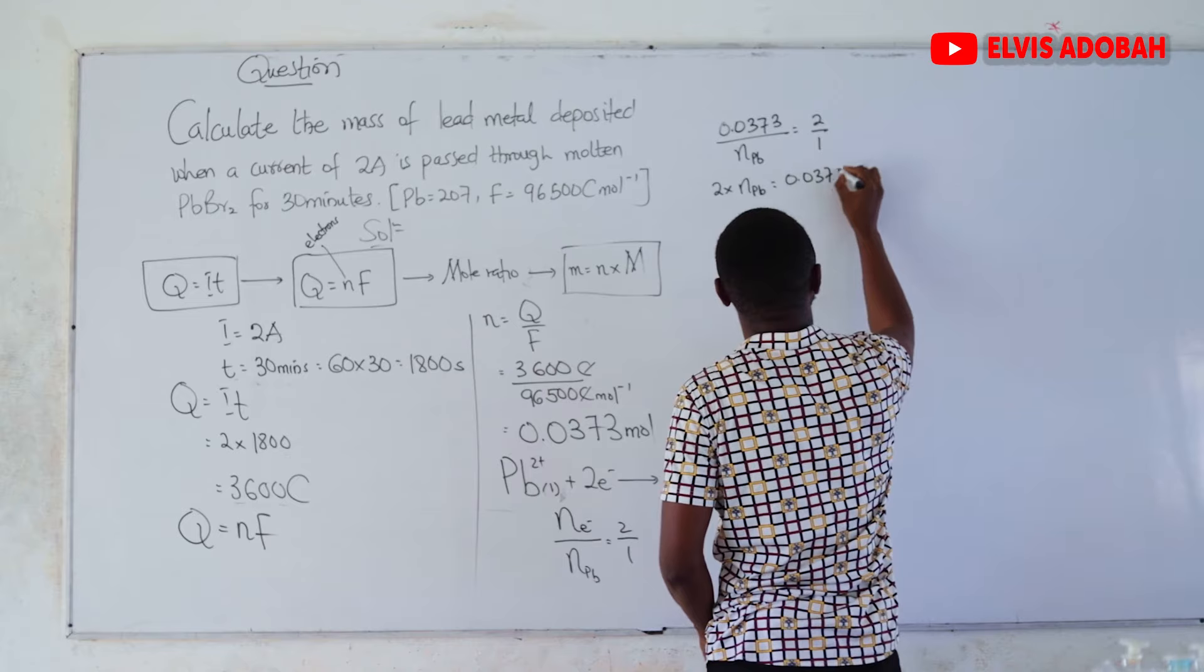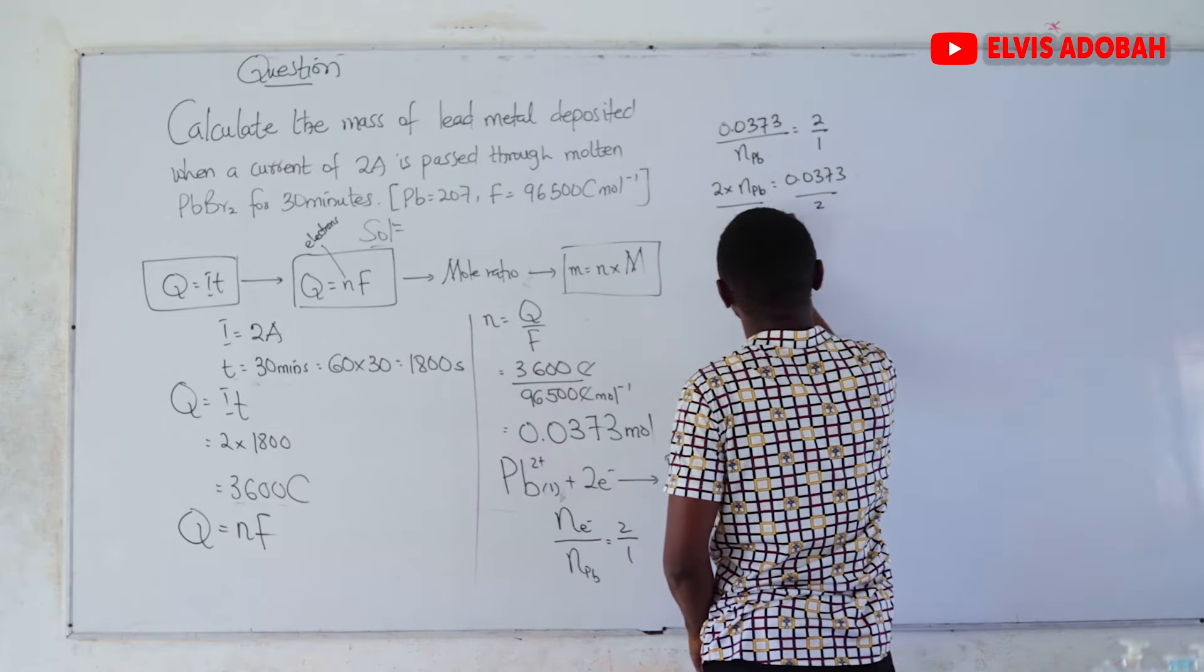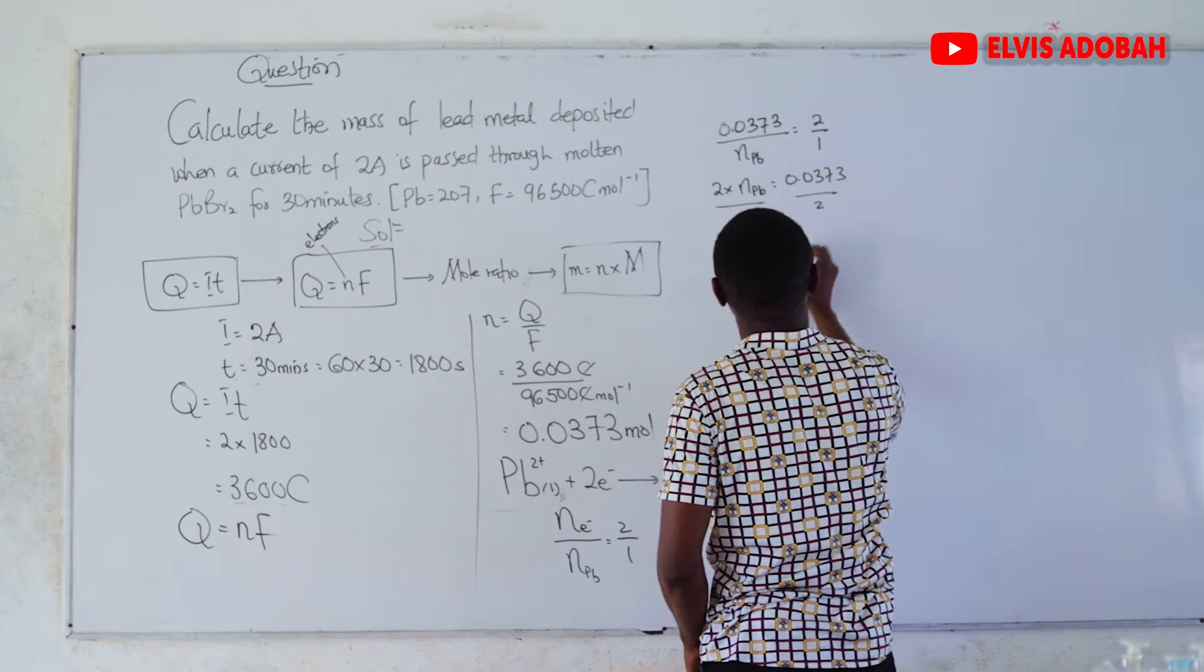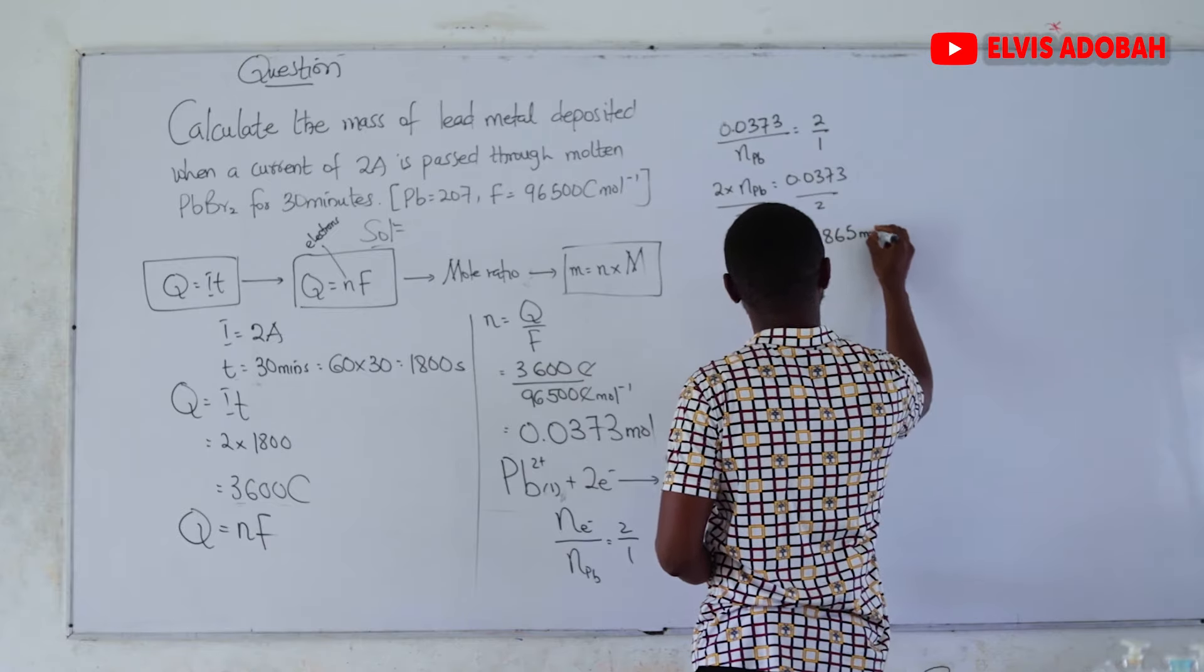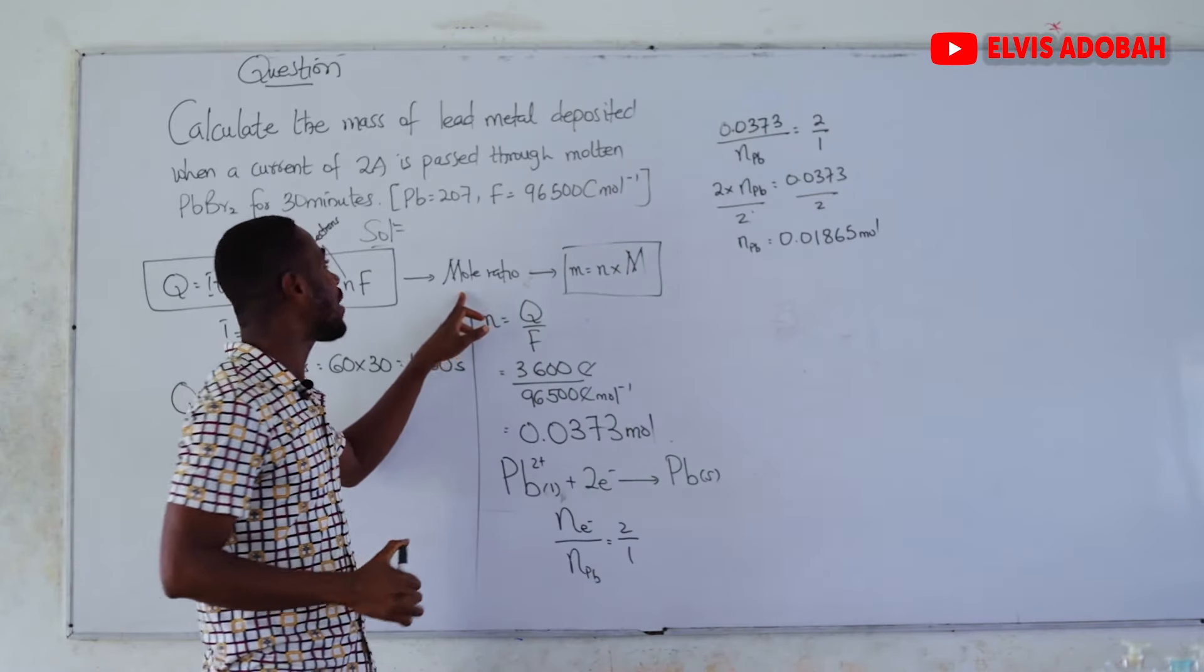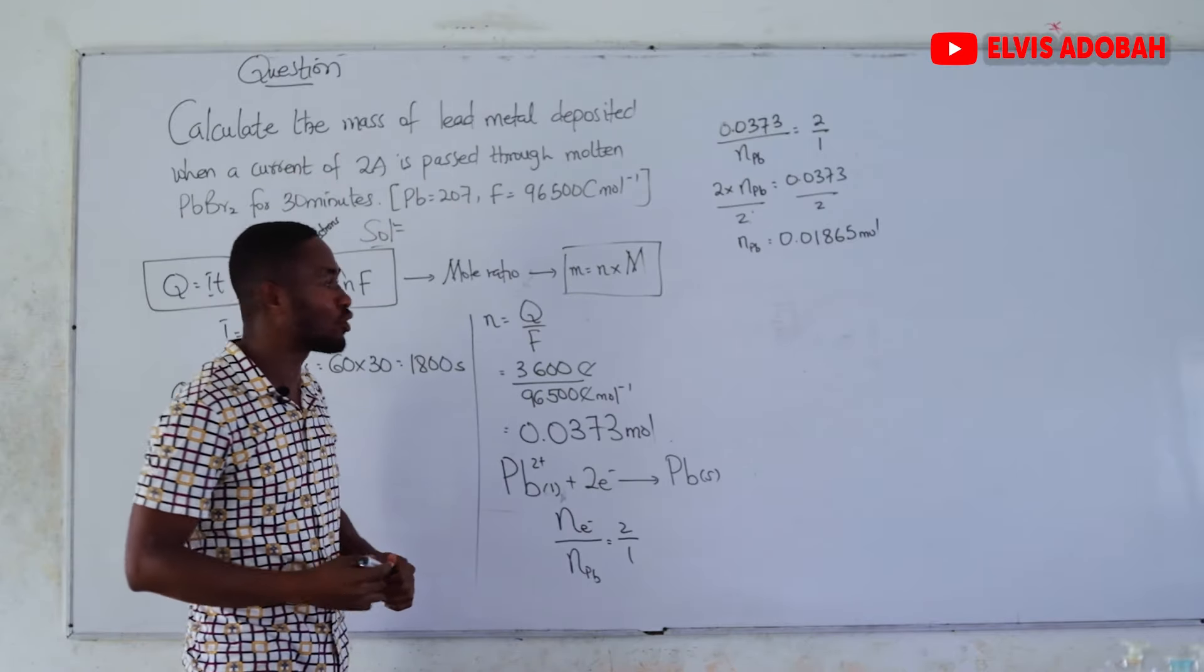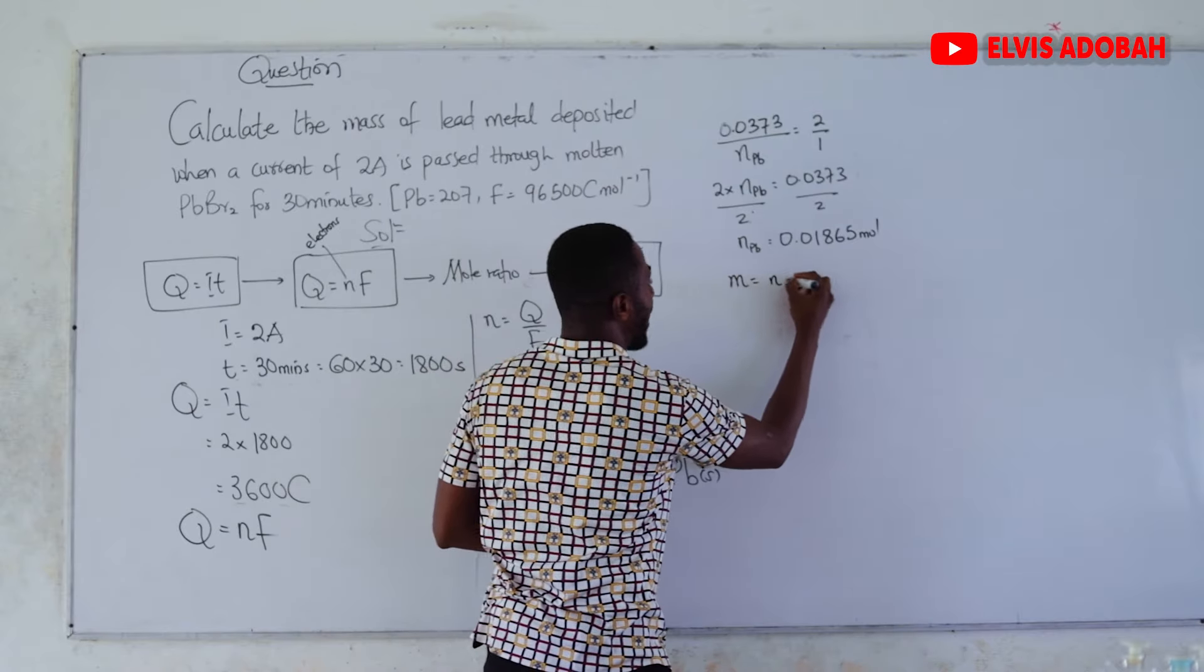We divide it by the amount of Pb is equal to 2 over 1. We will cross multiply: 2 times the amount of lead is equal to 0.0373. Then, we divide both sides by 2. We get our amount of Pb is equal to 0.01865 moles of lead metal. Now, we are done with the mole ratio.